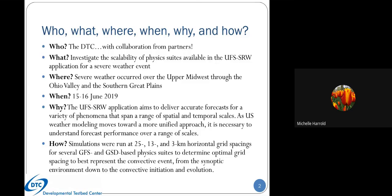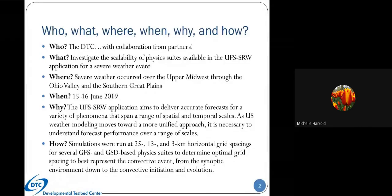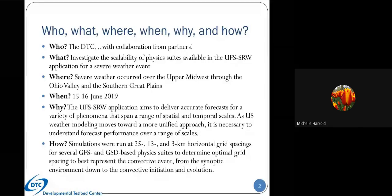The big motivation behind why we wanted to investigate this is that the UFS short-range weather app is planning its first public release in November. It aims to deliver accurate forecasts for a variety of weather phenomena—both high-impact and routine weather—spanning a range of spatial and temporal scales. As a community, U.S. weather modeling is moving towards a more unified approach, making it necessary to understand how forecast performance varies over a range of scales.